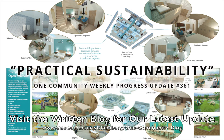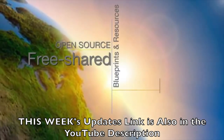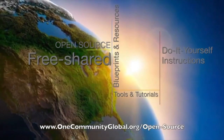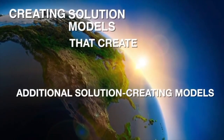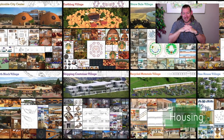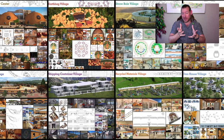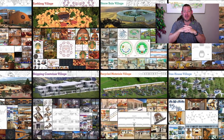Practical sustainability — One Community weekly progress update number 361. One Community is a 501c3 non-profit organization creating open-source and free-shared blueprints, resources, tools, tutorials, and do-it-yourself instructions for highest-good living — creating solution models that create additional solution-creating models in the service of all life on this planet. My name is Jay Sable and I'm the executive director of the One Community 501c3 non-profit. One Community is bringing people to consciousness for the highest good of all life on this planet, to build sustainable and self-replicating teacher demonstration hubs as a pathway to global sustainability.